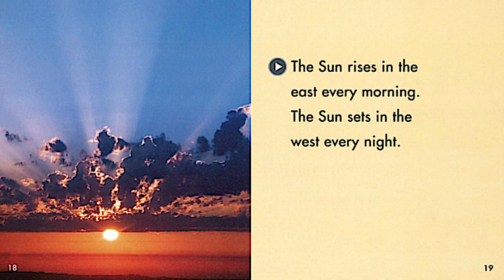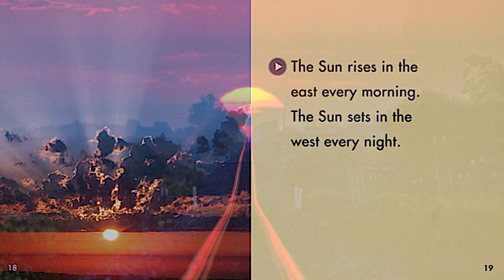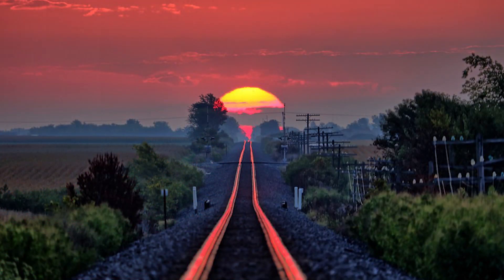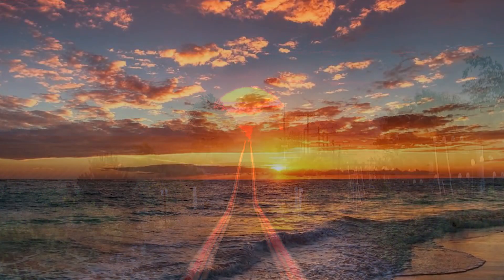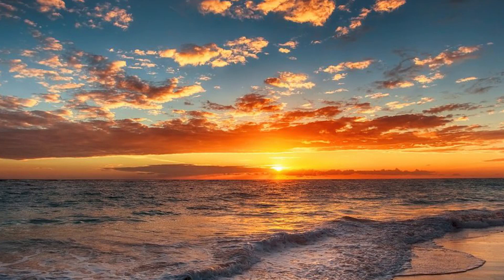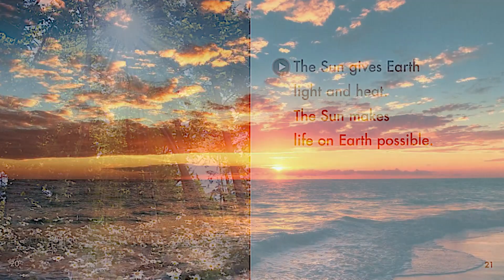The sun rises in the east every morning and the sun sets in the west every night. Take a look at that beautiful picture. Have you ever seen the sunrise in the morning? Have you ever seen the sunset at night? It's beautiful — lots of colors in the sky.